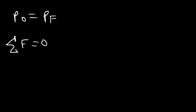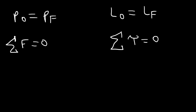The same is true for angular momentum. Angular momentum is conserved — meaning the initial and final angular momentum will be the same — if there are no external torques acting on the system. If the net torque is zero, then the initial angular momentum equals the final angular momentum: I-initial times omega-initial equals I-final times omega-final.